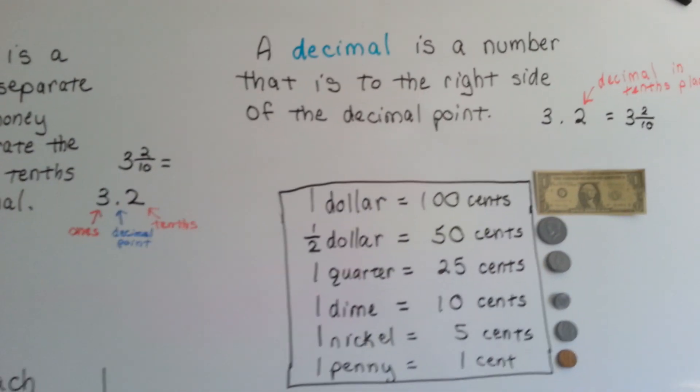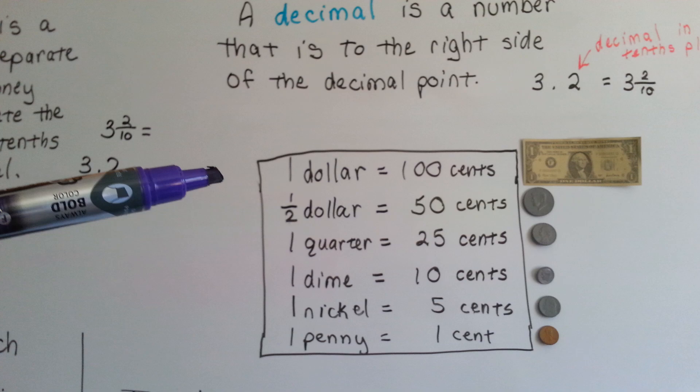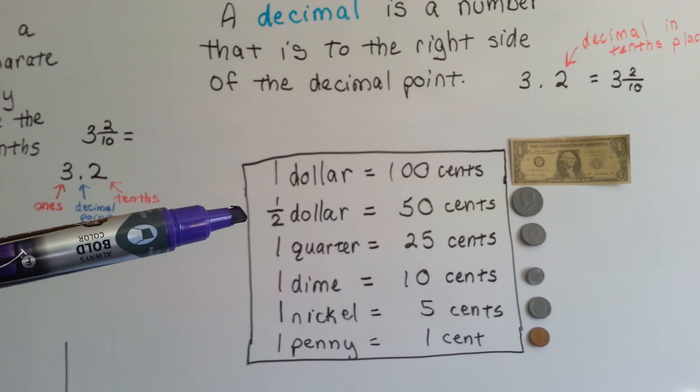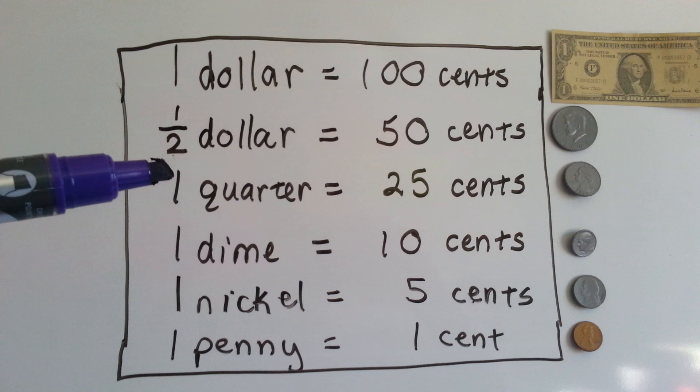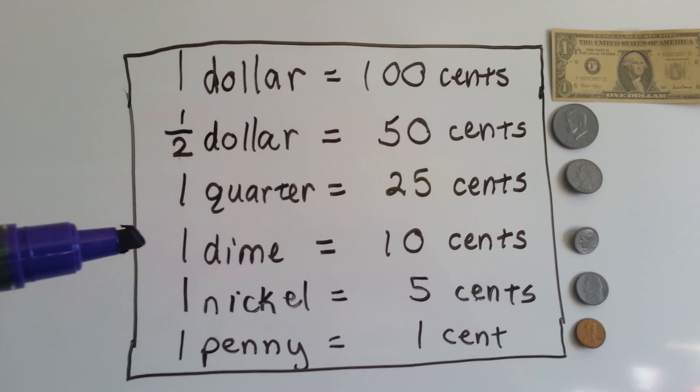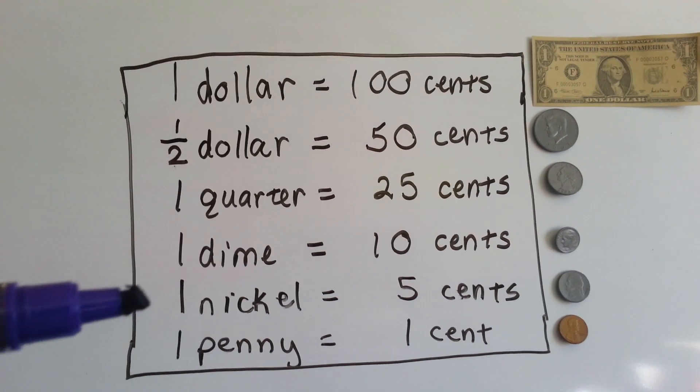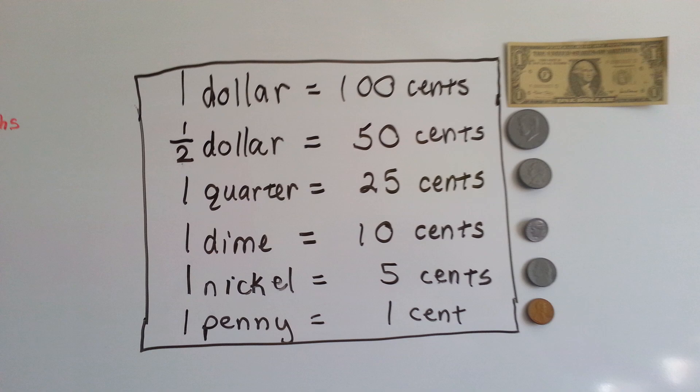A little more review. A dollar is one hundred cents. A half dollar is fifty cents. A quarter is twenty-five cents. A dime is ten cents. A nickel is five cents. And a penny is one cent.